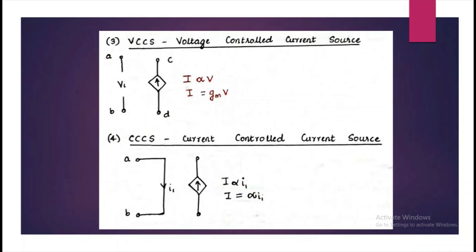Third one is VCCS voltage controlled current source, where the current source I depends upon the voltage source V1. And also, we have current controlled current source where one current source controls another current source.